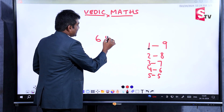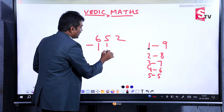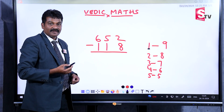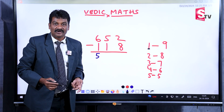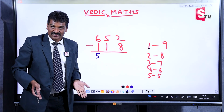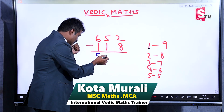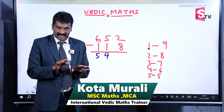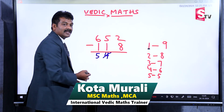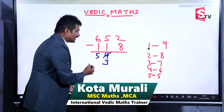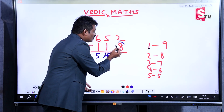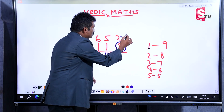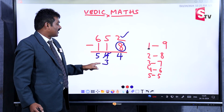Suppose the problem is 652 minus 118. 6 minus 1 is 5. Now, 5 minus 1 is possible, so don't cut the number — write it as it is. 5 minus 1 is 4. Next, 2 minus 8 is not possible. Immediately cut 4 and write the below number, which is 3. The complement of 8 is 2. Add 2 to top number 2: answer is 4. Your final answer is 534.